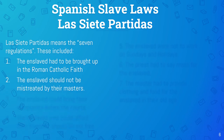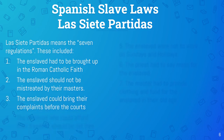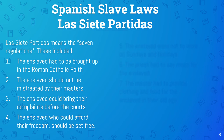Under Las Siete Partidas: the enslaved had to be brought up in the Roman Catholic faith. They should not be mistreated by their masters — again, this is about protecting the enslaved as property. The enslaved could bring their complaints before the court if a slave master was mistreating them. Also, the enslaved who could afford their freedom should be set free — if you had saved enough rations, land, or money, you could buy your freedom.